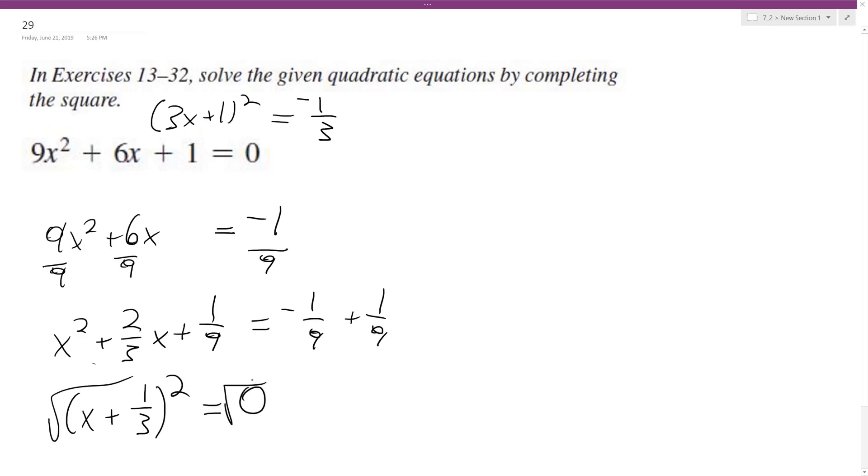Take square root of both sides. And we end up with x plus 1 third equals 0. Subtract 1 third. And that's where we get x is just equal to negative 1 third, even though this is a double root technically.